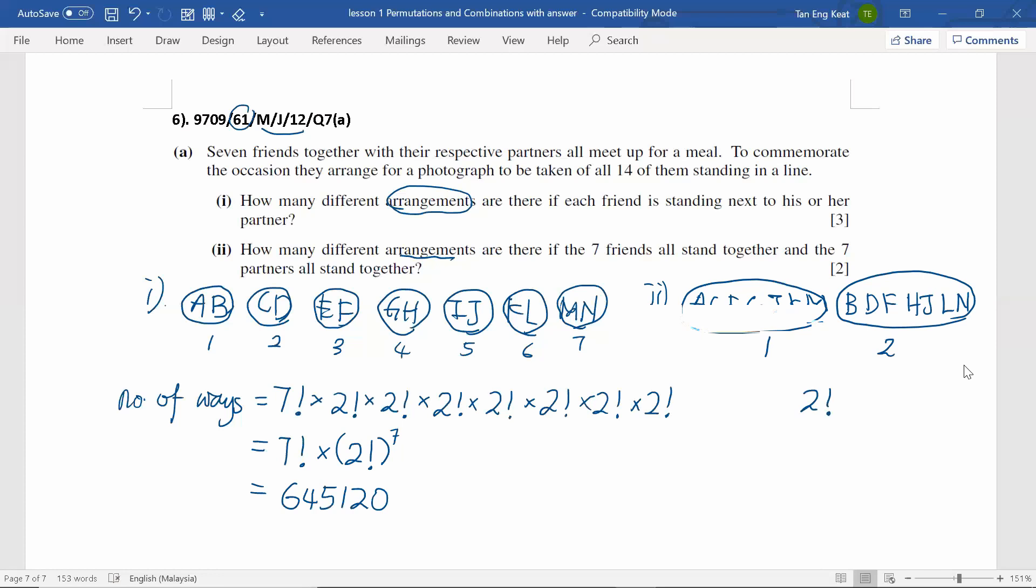So, there are two factorial ways for them to be arranged. And don't forget, the seven friends, they can arrange among themselves and it has seven factorial ways.